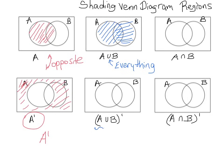A union B is what we just shaded. Now we have a prime symbol, so we shade the opposite of A union B — which is everything on the outside of both circles.